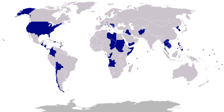1941–1945, World War II: on December 8, 1941, the United States declared war against Japan in response to the bombing of Pearl Harbor. On December 11, Germany and Italy declared war against the United States.